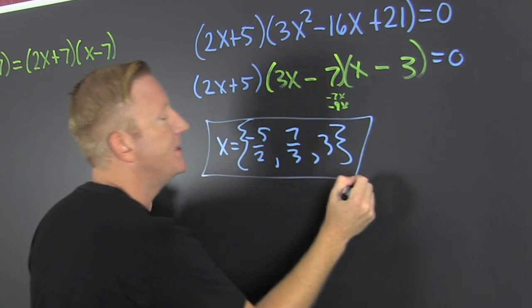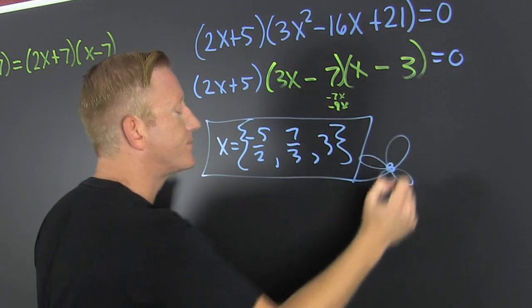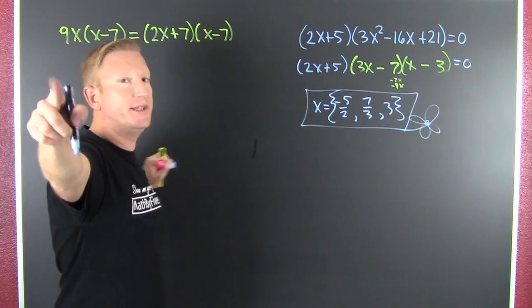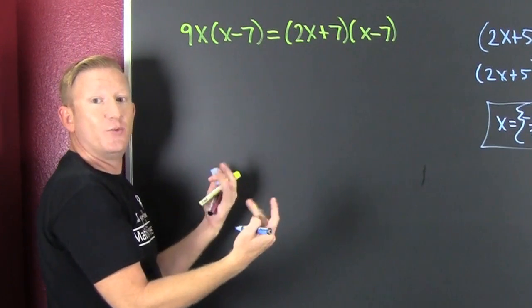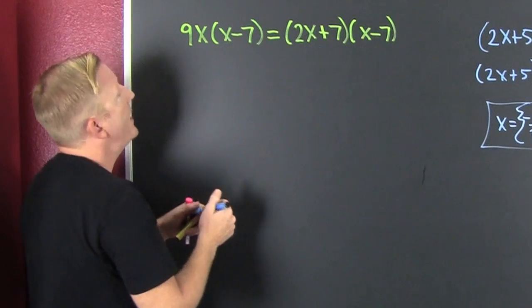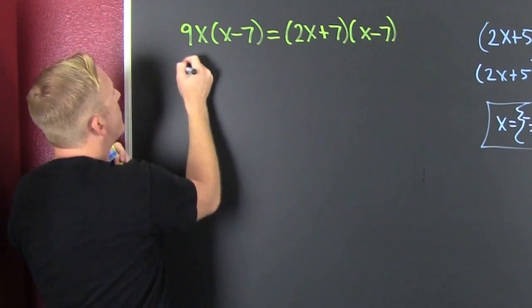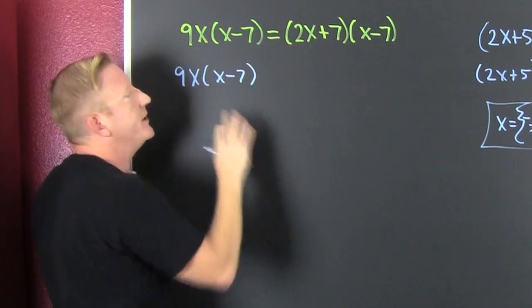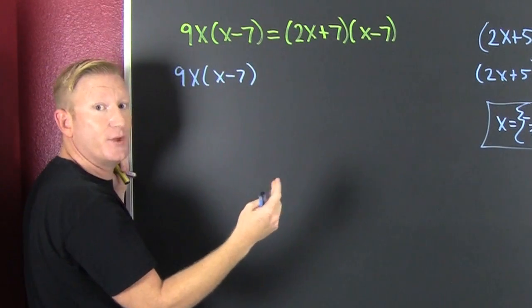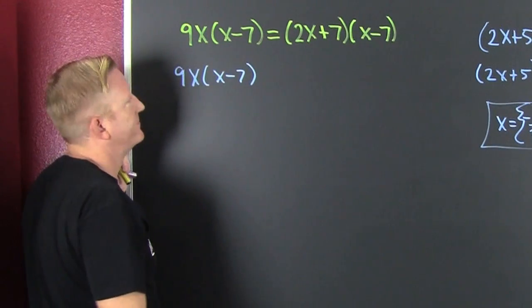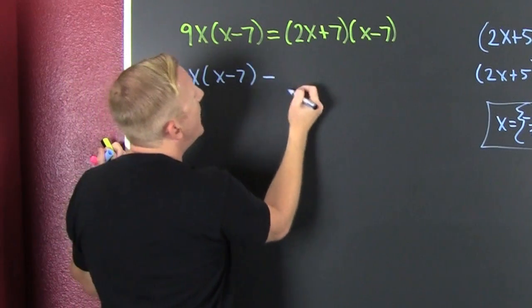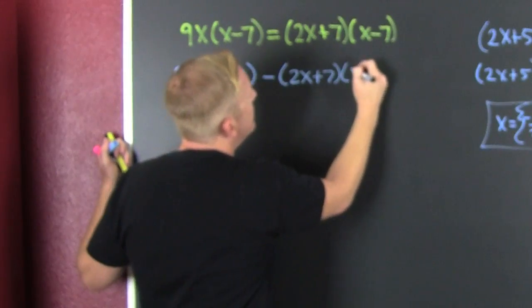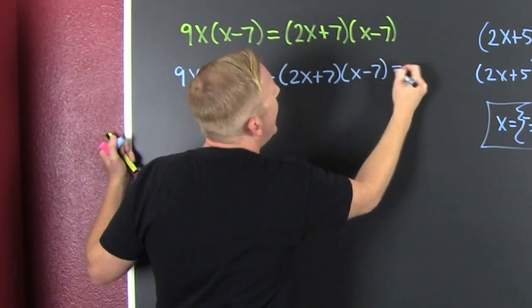That was kind of the end of this three. Example two - this guy, I need to get it all to one side, set it equal to zero. I'm going to have a 9x times x minus 7. Could you multiply everything out and then get it to one side? Yeah, but this one's special. Minus - whoa - 2x plus 7 times x minus 7.